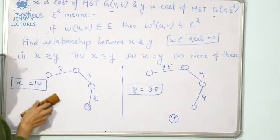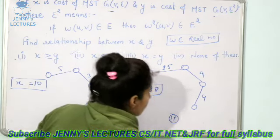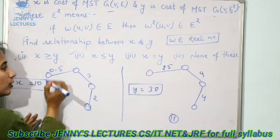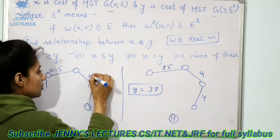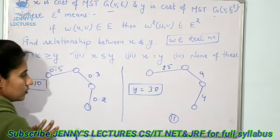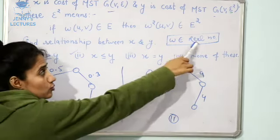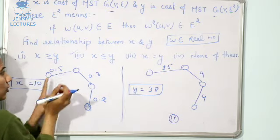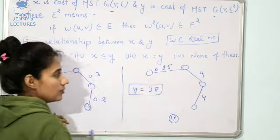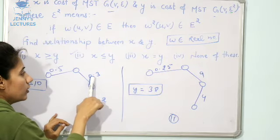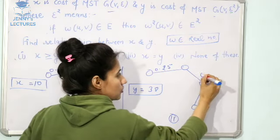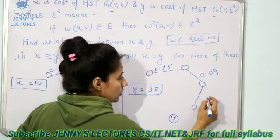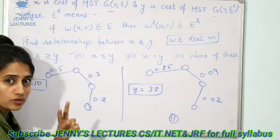I am going to take one counter example. Let us suppose this edge weight is 0.5, this one is 0.3 and this one is 0.2. Because X belongs to real numbers - you have to keep this in mind. Now, what would be the square of 0.5? It would be 0.25. What is the square of 0.3? It would be 0.09. What would be the square of 0.2? It would be 0.04. This one is our second case.